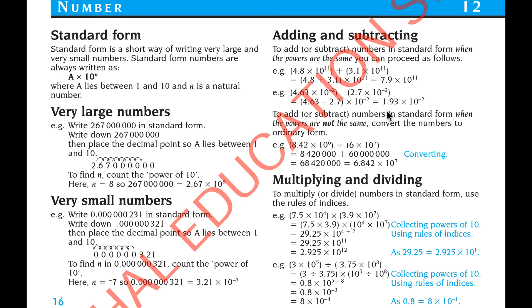To add or subtract numbers in the standard form, when the powers are not the same, convert the numbers to ordinary form. Or you can do in this way, 8.42 multiplied 10 to the power 6 plus 6 multiplied 10 to the power 7. So you write convert into ordinary form, then add together and write.